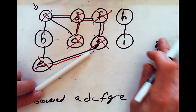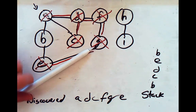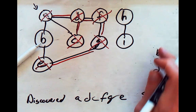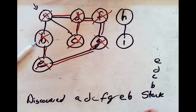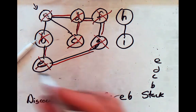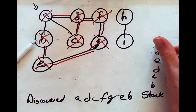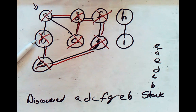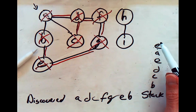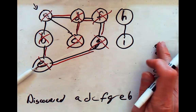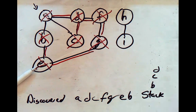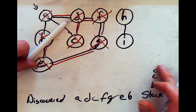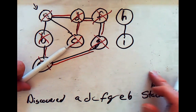We repeat the process: pop G — already discovered, nothing to do. Pop B — it hasn't been discovered yet, so we mark it as discovered, highlight the path, and add it to the list. We add everything B is connected to: A and E, both pushed onto the stack. Then we pop E — already discovered. Pop A — already discovered. Pop E again — already discovered. Pop D — already discovered. C and B are similarly already discovered, so the stack is drained.